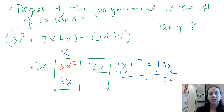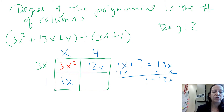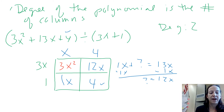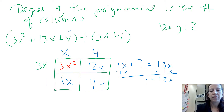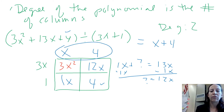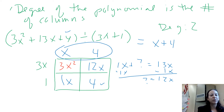Now we repeat the process: 3x times what gives me 12x? That would be 4. Then 4 times 1 gives us 4 down here, and notice that matches the 4 in the original problem. So 3x plus 1 times x plus 4 works out. When you add everything up — 3x squared plus 13x plus 4 — it equals what we had. So the answer to the division problem is x plus 4, reading across the top of the box.